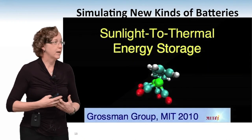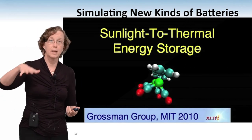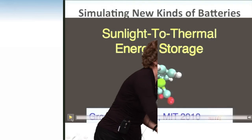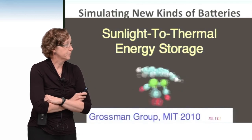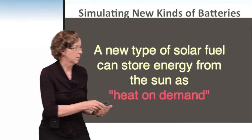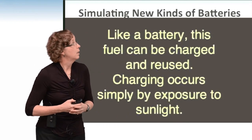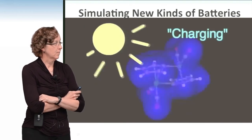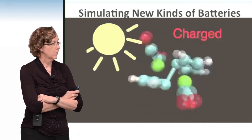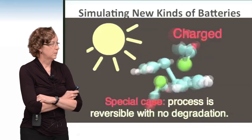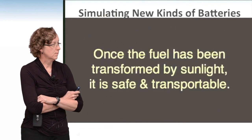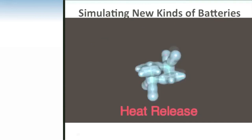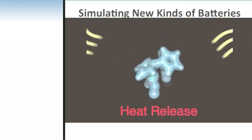Another example of an energy-efficient device is storing energy by turning sunlight into thermal energy — heat that can be released later. This work is from Jeff Grossman, formerly at UC Berkeley and now at MIT. It's based on a molecule that can store energy from the sun internally and release it as heat on demand — essentially a rechargeable heat battery. When sunlight strikes the molecule, it undergoes a reaction transforming it into a higher energy state. This particular molecule can do this reversibly with no degradation, making it stable and transportable. A simple catalyst then causes it to return to its original state, releasing stored energy as heat.